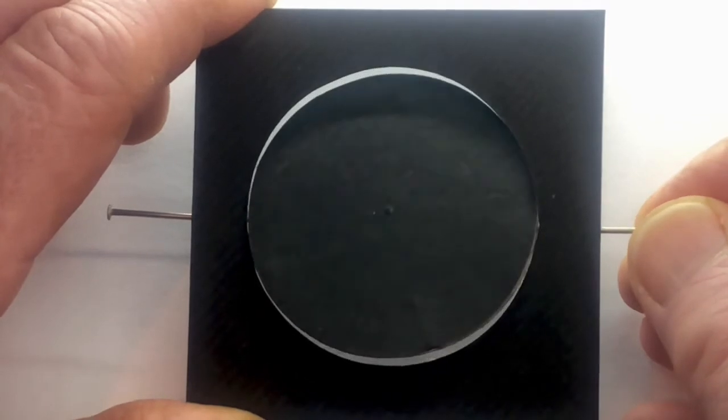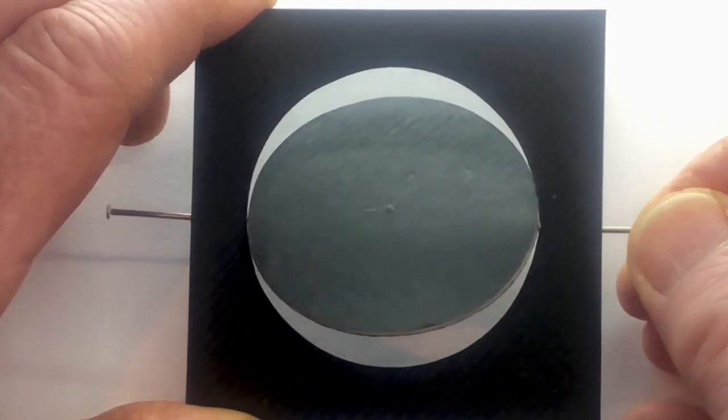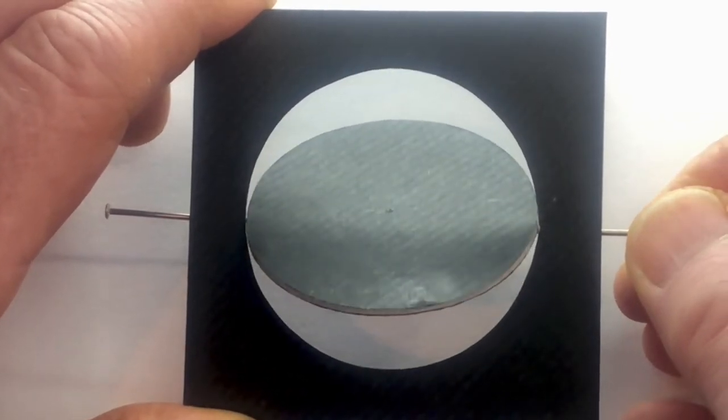An ellipse is a shape that results from viewing a circle at a different angle.